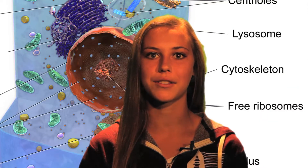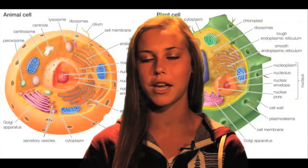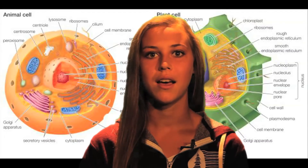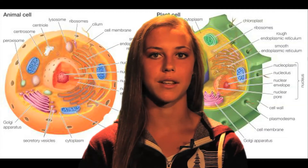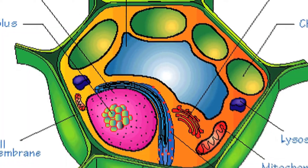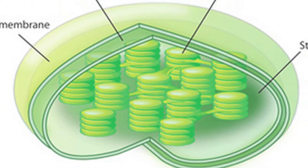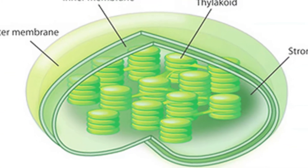Eukaryotic cells also differ in whether they are plant or animal cells. Unlike animal cells, plant cells contain a rigid cell wall to maintain shape and chloroplasts to carry out the process of photosynthesis.